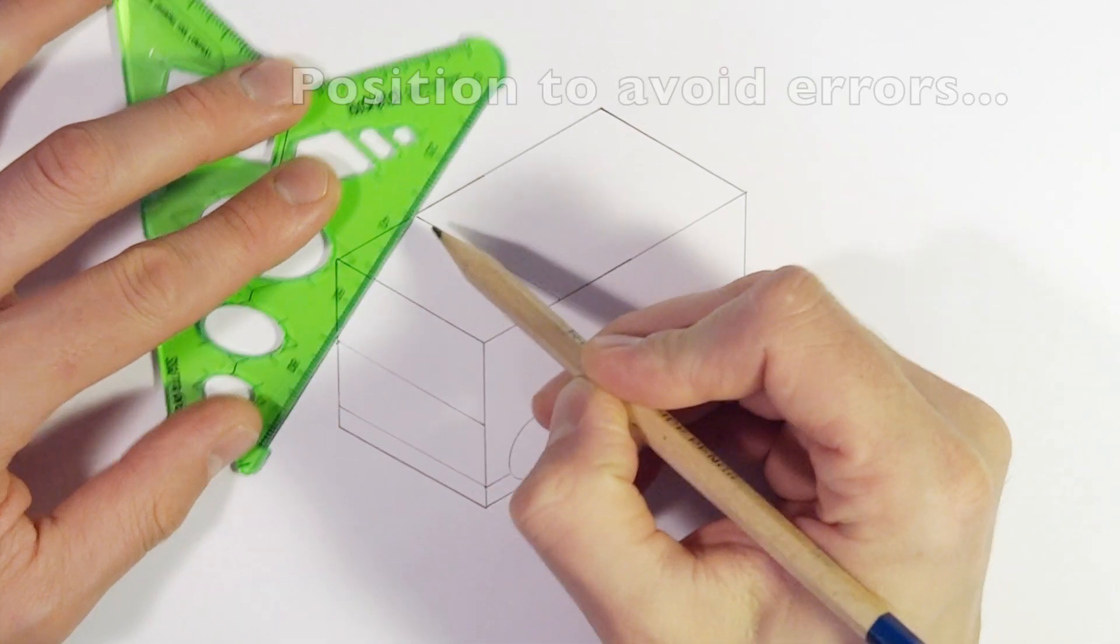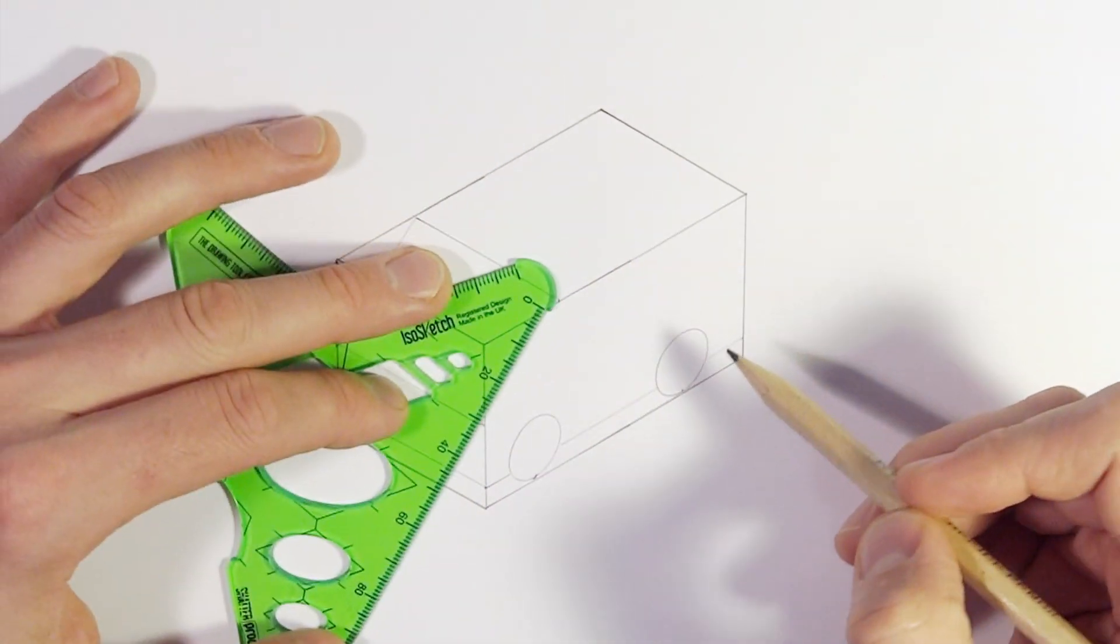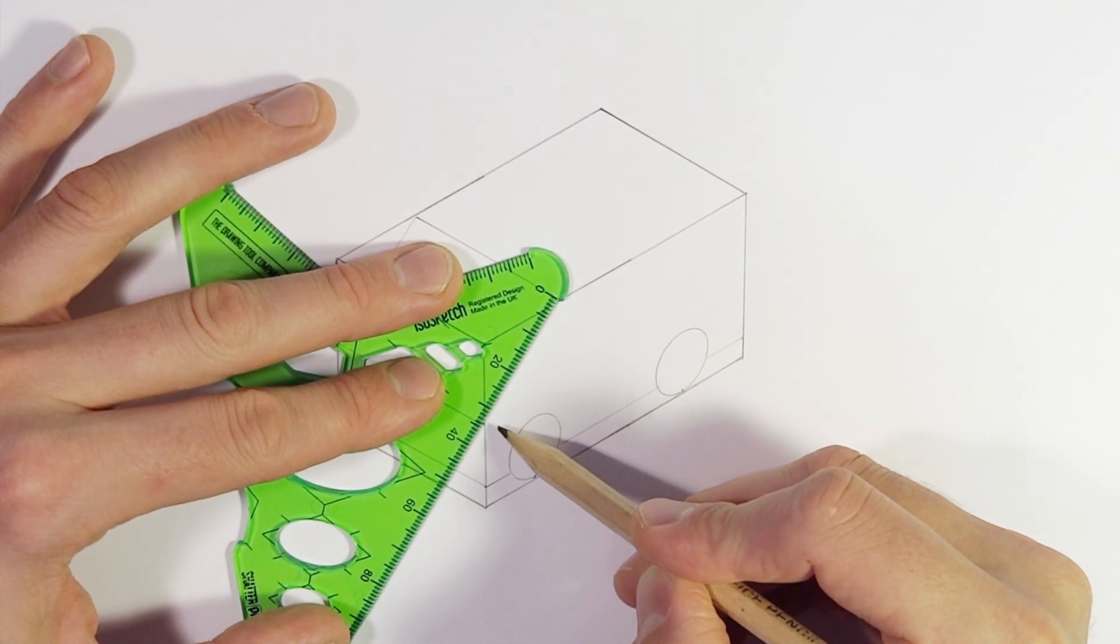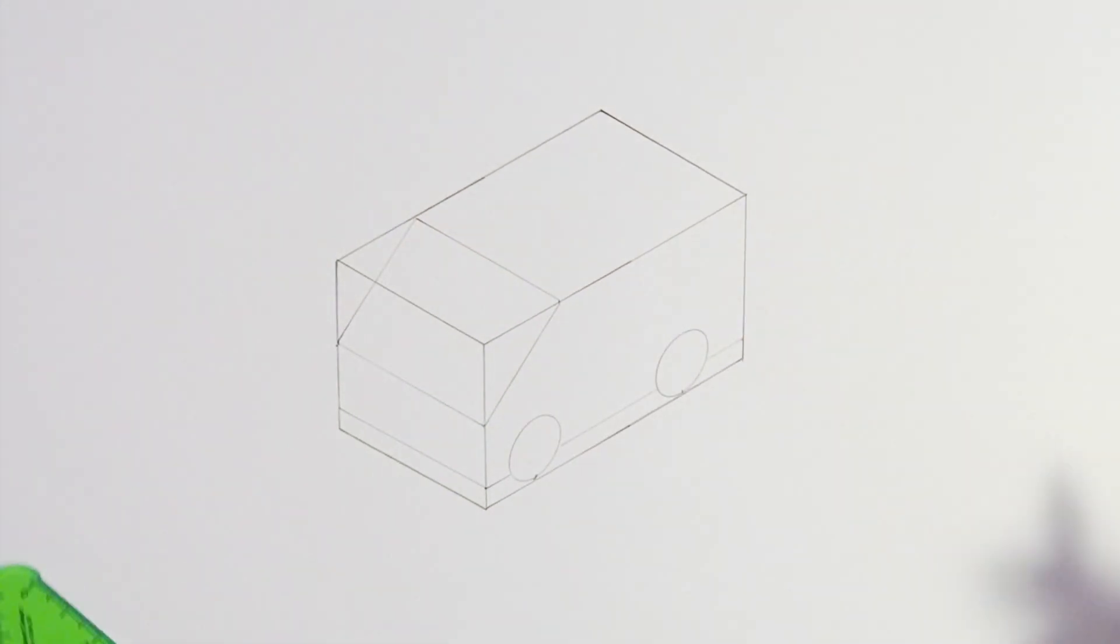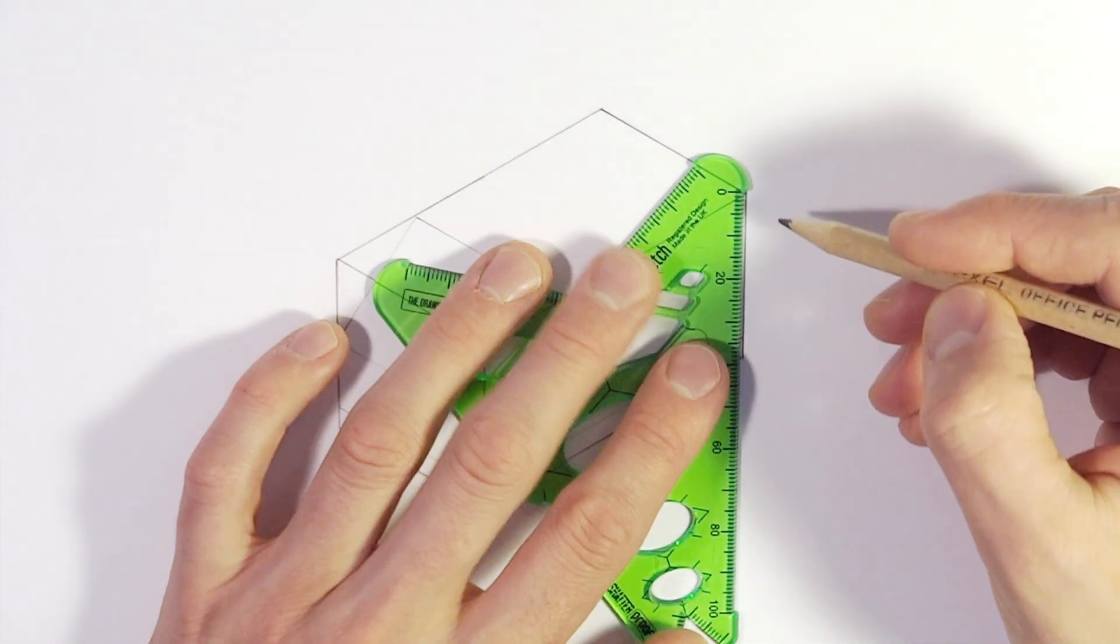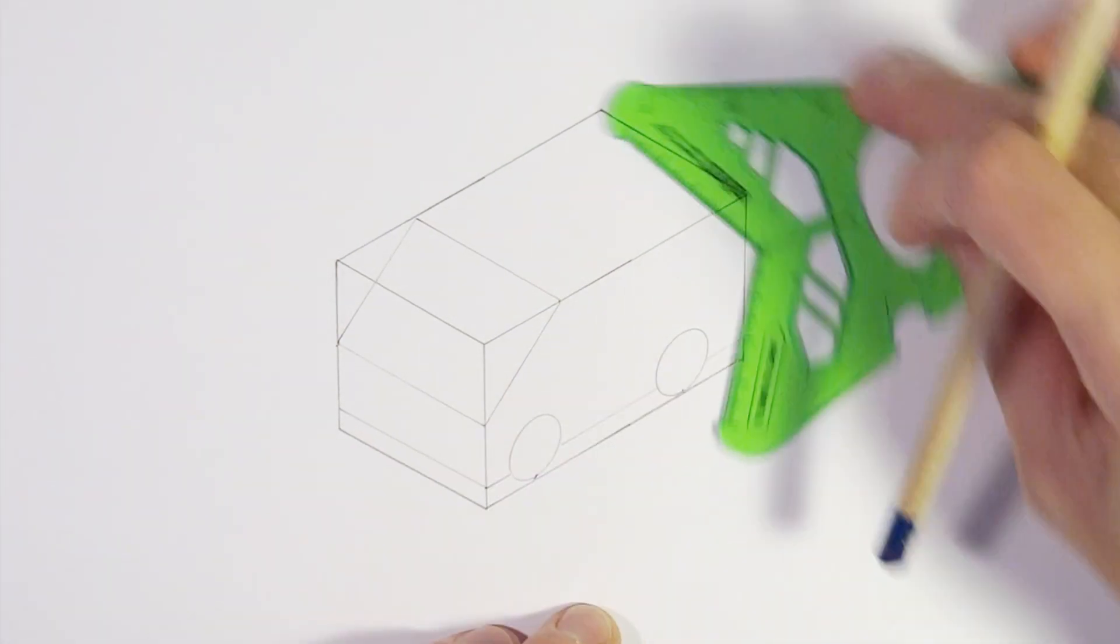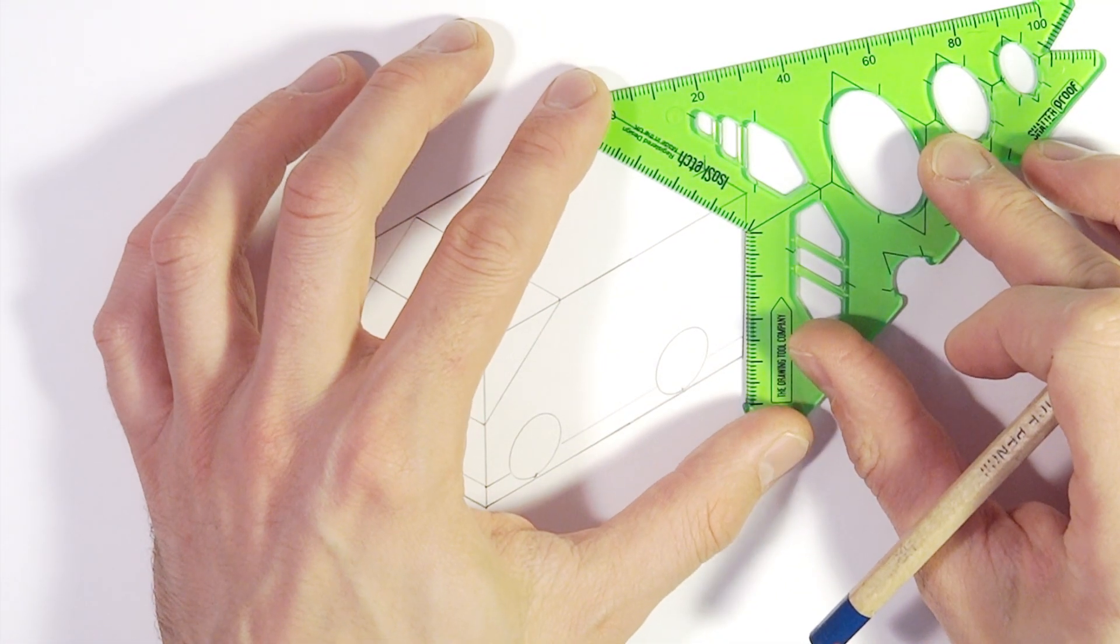Then it's just a case of joining up these dots. I'm actually going to use the little stopper on the end of the ruler here to make it super easy. Now you can see a car starting to emerge and you're probably thinking, hang on a minute this is looking a bit like a bread van. Don't worry, don't panic, you're going to have to bear with me.